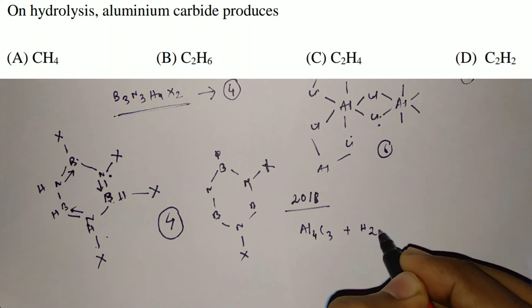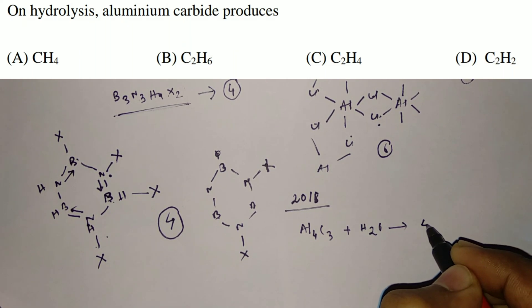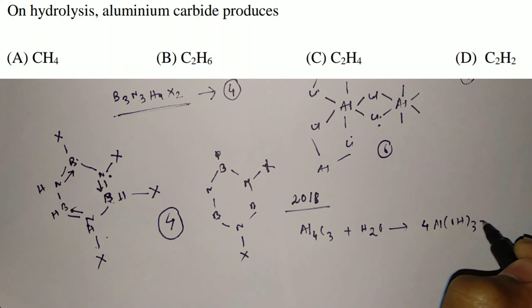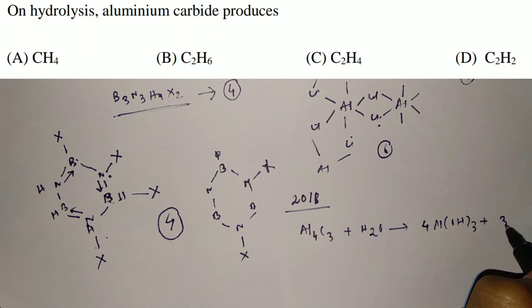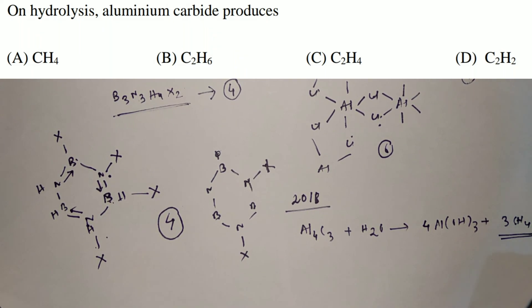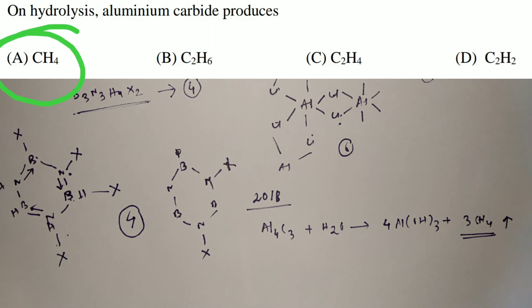Aluminium carbide, Al4C3, on hydrolysis gives 4Al(OH)3 plus 3CH4. So the answer is CH4 — that is methane. The final answer is methane.